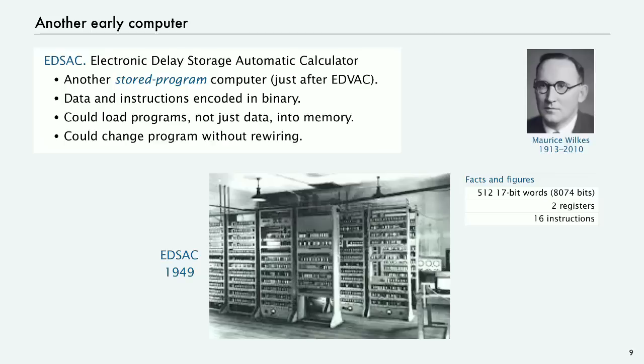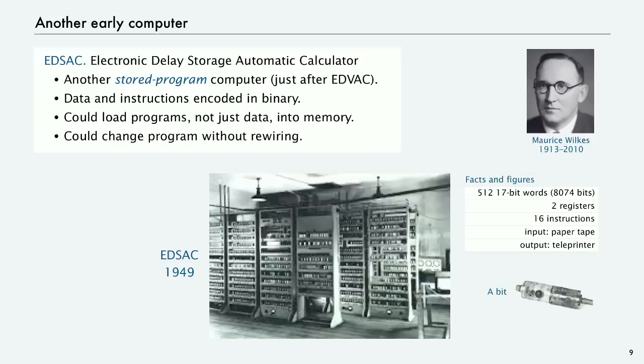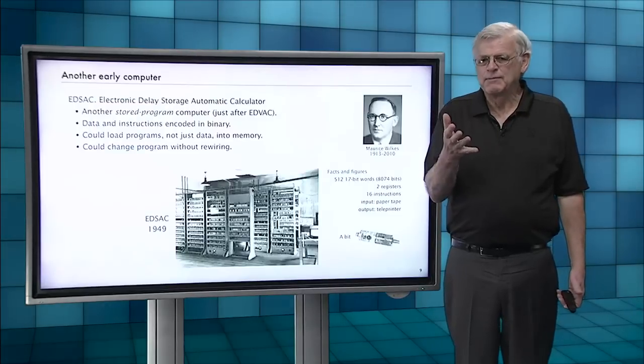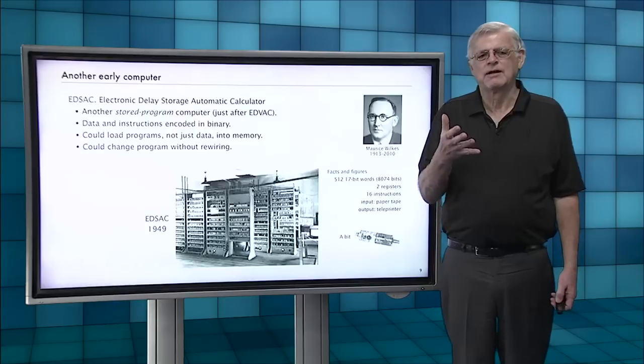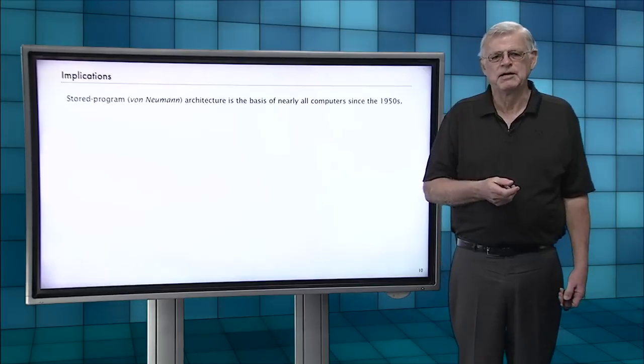That machine had 512 17-bit words, not so different than TOY, two registers, 16 instructions. The input was paper tape. The output was not paper tape. It was teleprinter. And there, a bit was a different kind of device, not a vacuum tube, but still not that much smaller. And this thing came into existence quite quickly because von Neumann's memo so beautifully laid out the blueprint of what needed to be done.